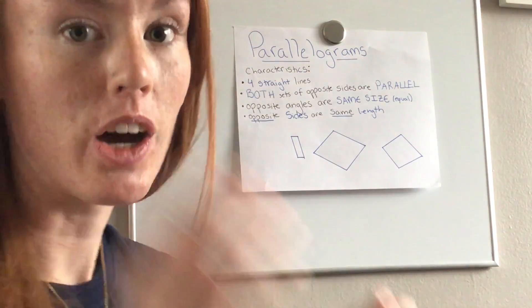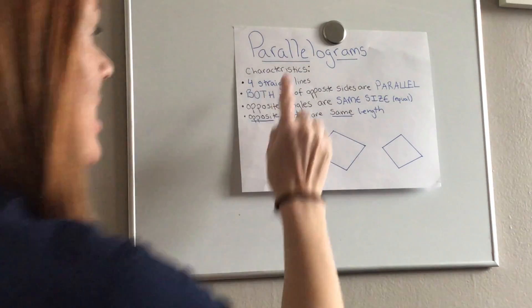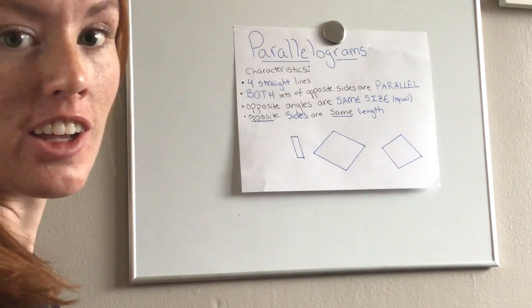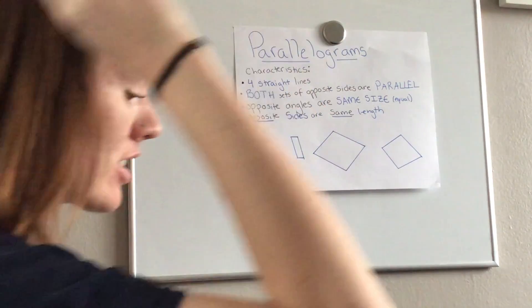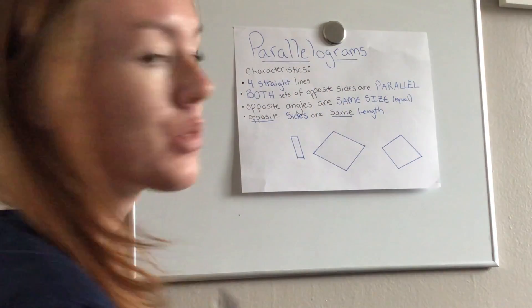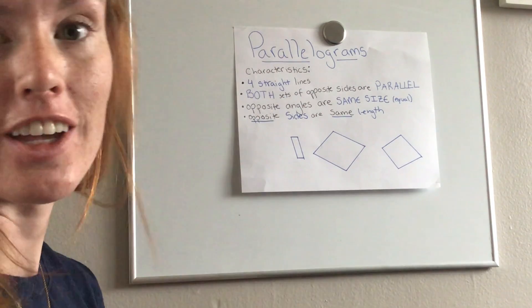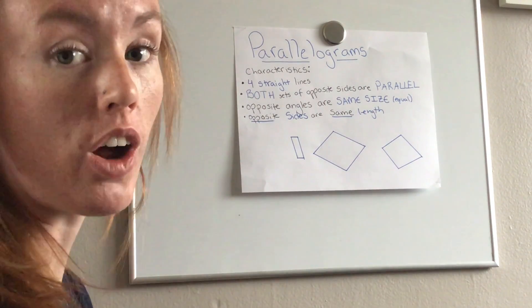Now another type of quadrilateral is the parallelogram. The parallelogram has similar traits to the trapezoid but it's slightly different, meaning it is a different shape, it just shares some qualities.